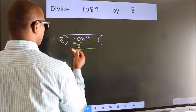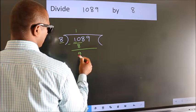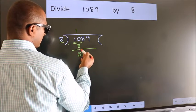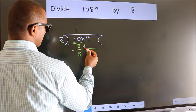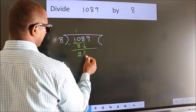Now we should subtract. We get 2. After this, bring down the beside number. So 8 down.